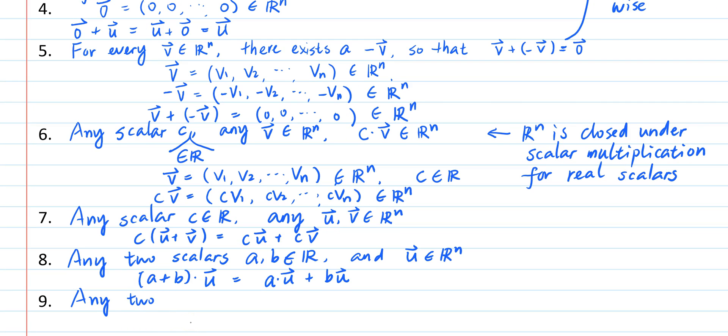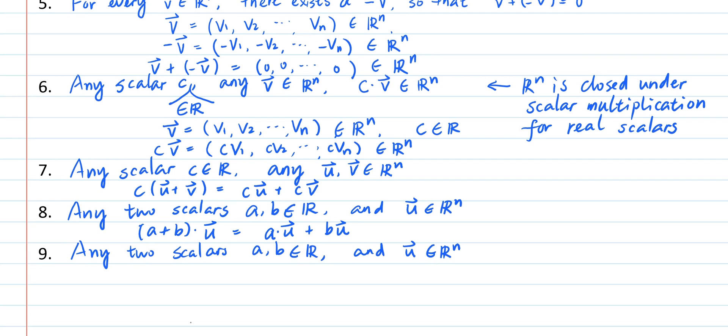The ninth property says, again for any two scalars a and b, and an element u of R^n, the scalar multiple of b with au is equal to the scalar multiple of ab and u. In other words, there is the associative law of scalar multiplication.